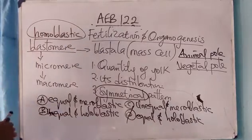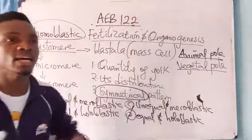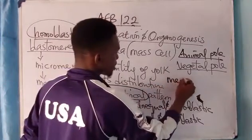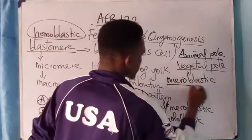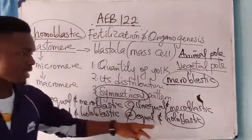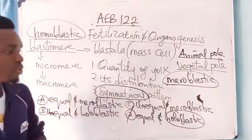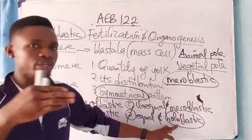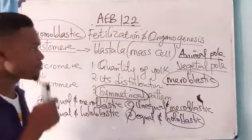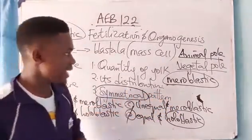A homolecithal egg has a moderate amount of yolk that is evenly distributed. Now, a meroblastic egg has a lot of yolk in it, so the furrow is not able to penetrate through the egg. In contrast, a holoblastic egg has little yolk, so the furrow is able to penetrate through the egg easily.